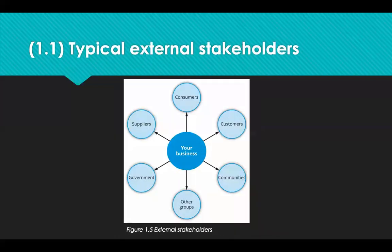Let's take a look at some typical external stakeholders. Your suppliers — they could be manufacturers, wholesalers, or companies that supply goods or services to your organisation. Customers are the people who pay for your goods and services. Consumers are the end user of the product or service — they may or may not be your customer. Communities are typically the group of people who live near where your organisation operates. The government is responsible for approving planning permissions and licences. And other groups like trade and professional bodies like CIPS.